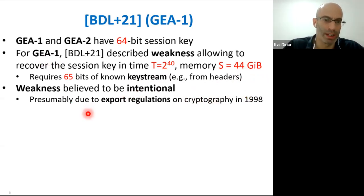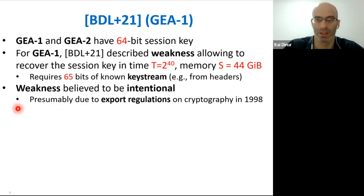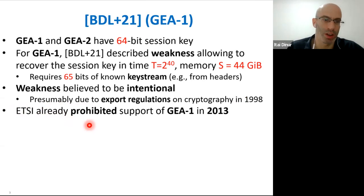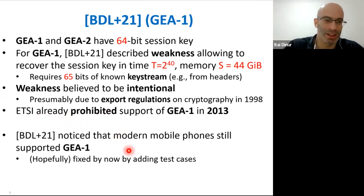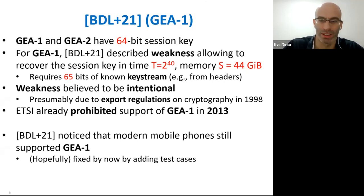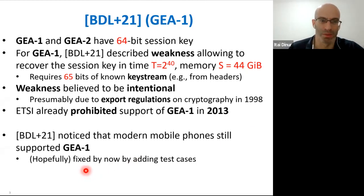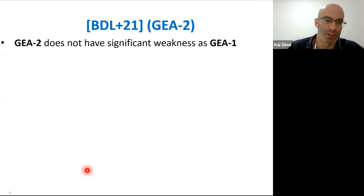The attack is based on a weakness believed to be intentional, probably due to export regulations that were in place at the time the cipher was designed. The use of GEA1 was already prohibited back in 2013. But surprisingly, the BDL paper noticed that modern mobile phones still supported GEA1, which could lead to downgrade attacks with actual practical impact. This defect is now supposedly fixed by verifying that GEA1 is no longer supported.